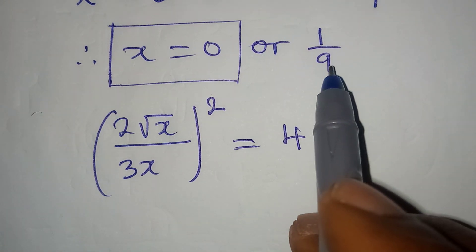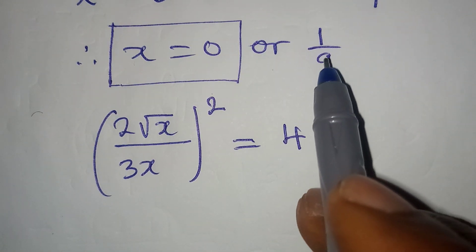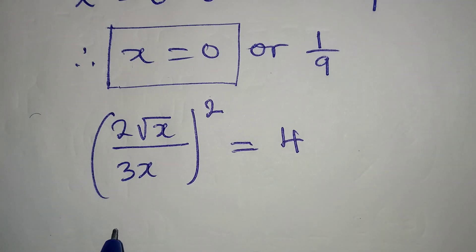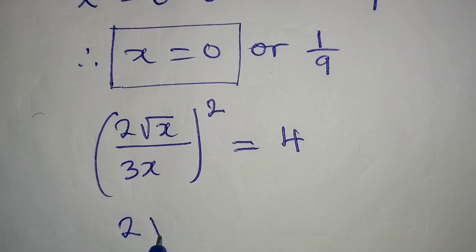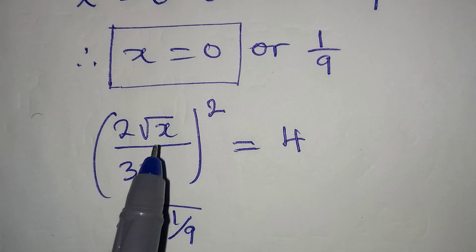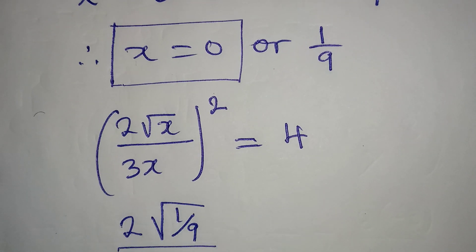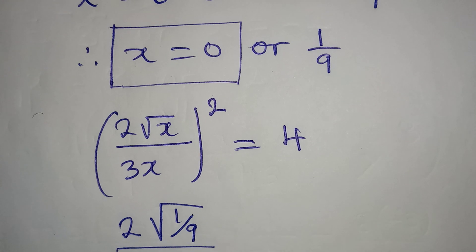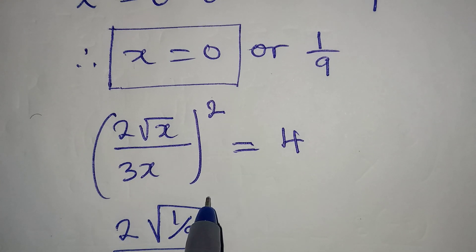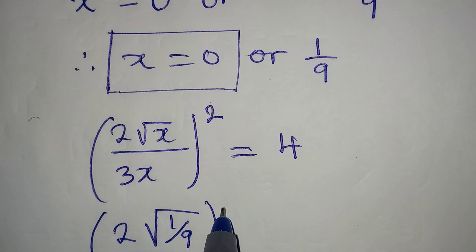But then let's put in the value of x as 1/9. So this is going to be 2√(1/9) over 3 × (1/9). Now the whole of this will be squared.